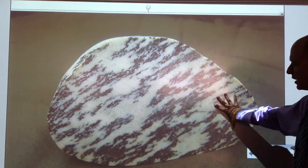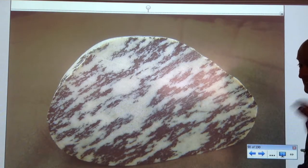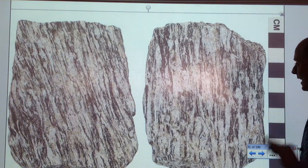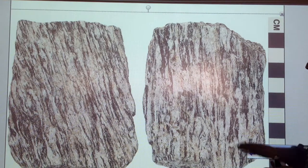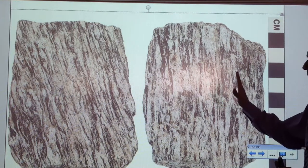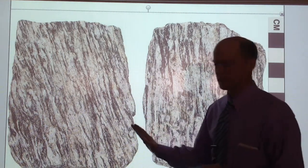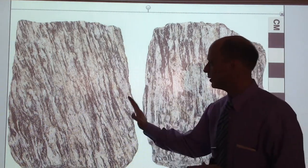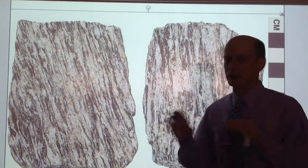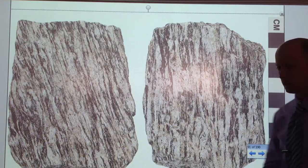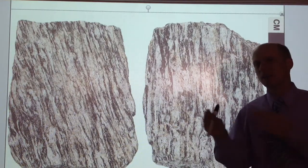So this is a metamorphic rock called gneiss — spelled G-N-E-I-S-S, silent G. Here we see this pattern. I often call it like a zebra stripe. That is a key thing to metamorphic rocks.